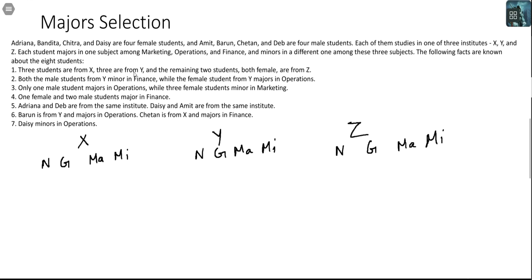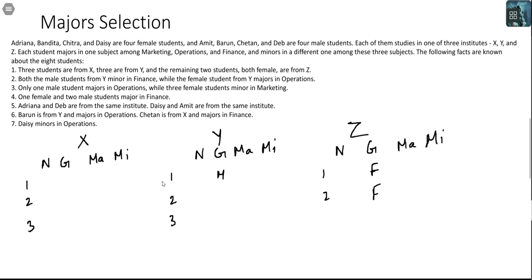There are 3 students from X and 3 from Y. The remaining 2 students, both female, are from Z. So there will be 3 people in X, 3 people in Y, and only 2 people in Z. Both the male students in Y minor in Finance, while the female student from Y majors in Operations.